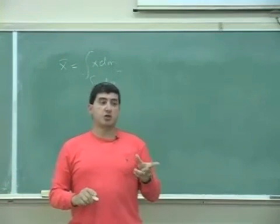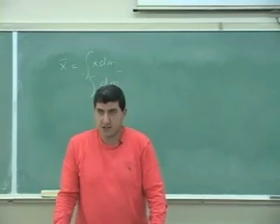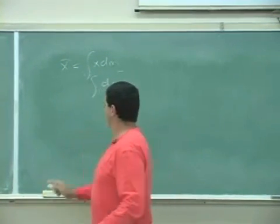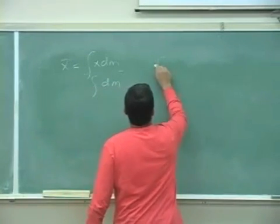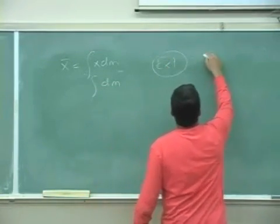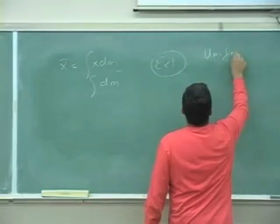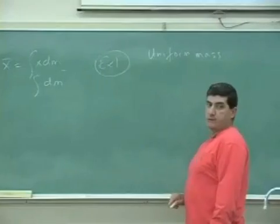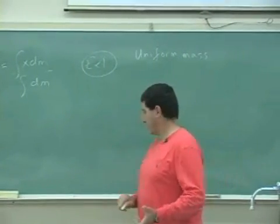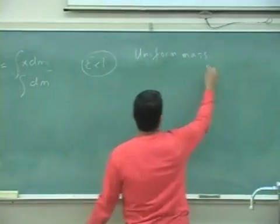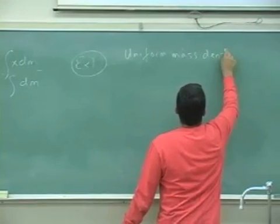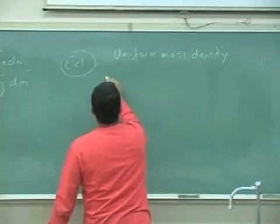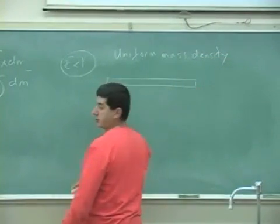So this one is used in cases such as this. Let's say I have a rod. Let's begin with a rod. Uniform mass. Uniform mass, uniform density, I should say uniform mass density. So you have a rod and I want to find its center of mass.